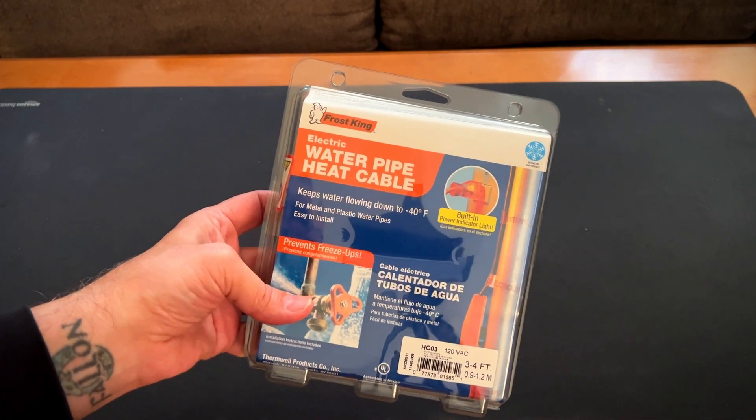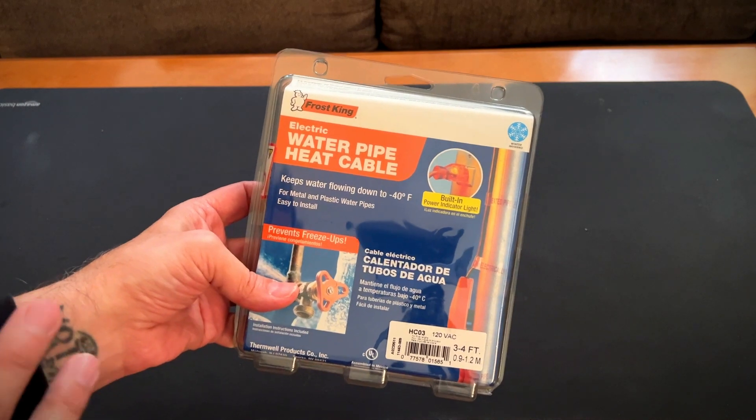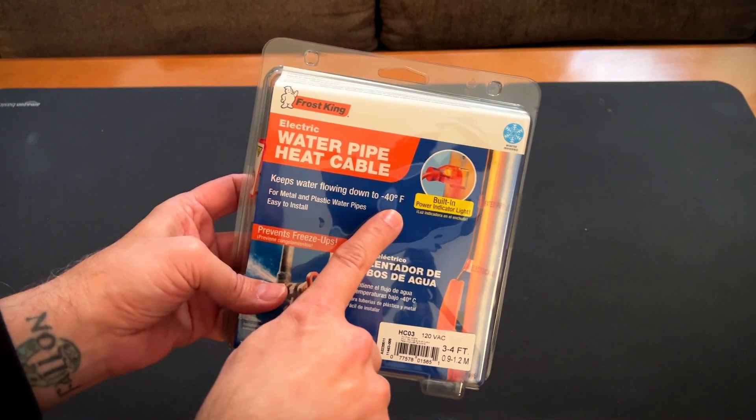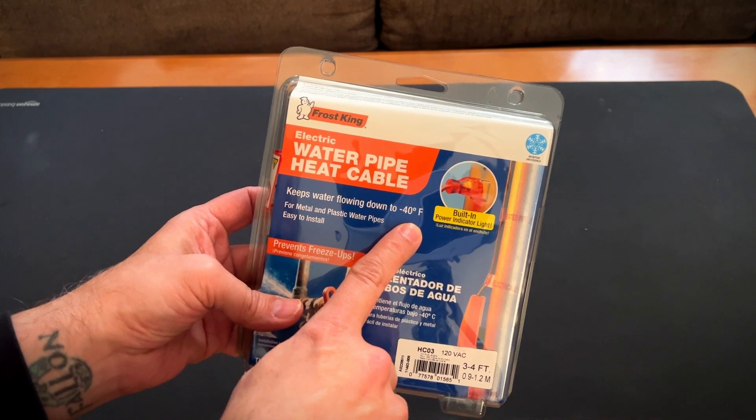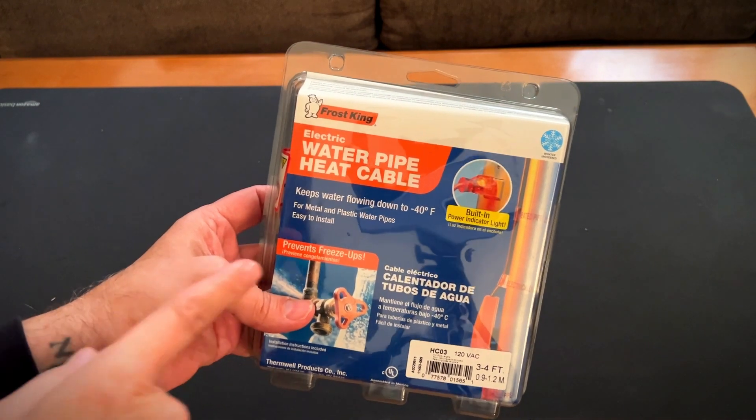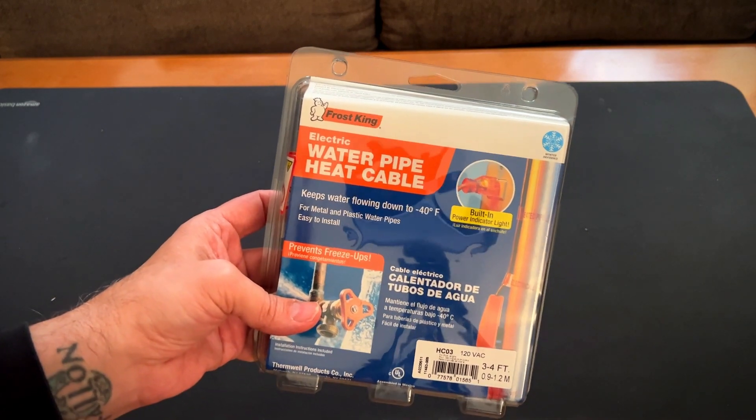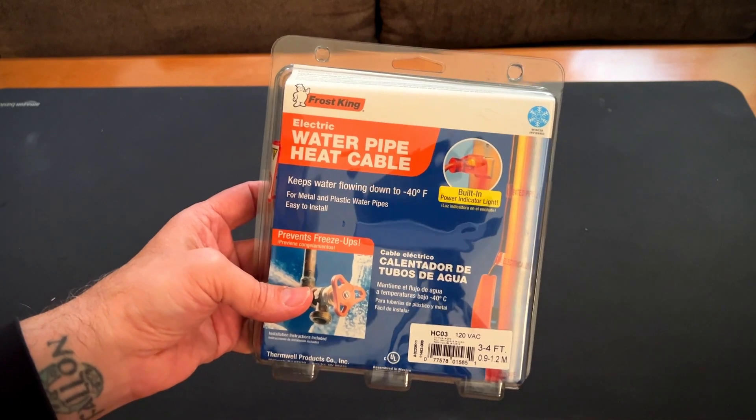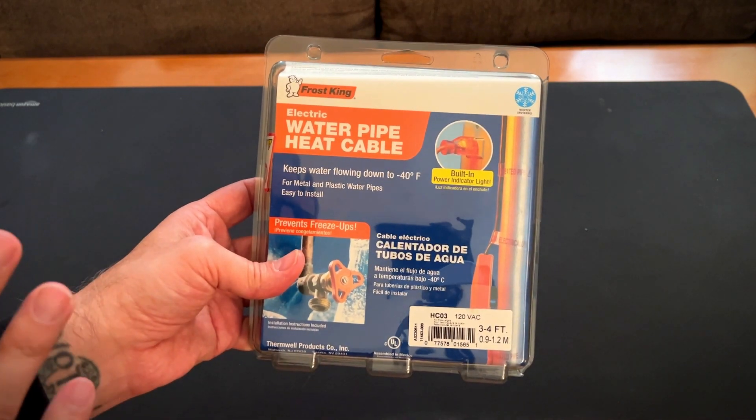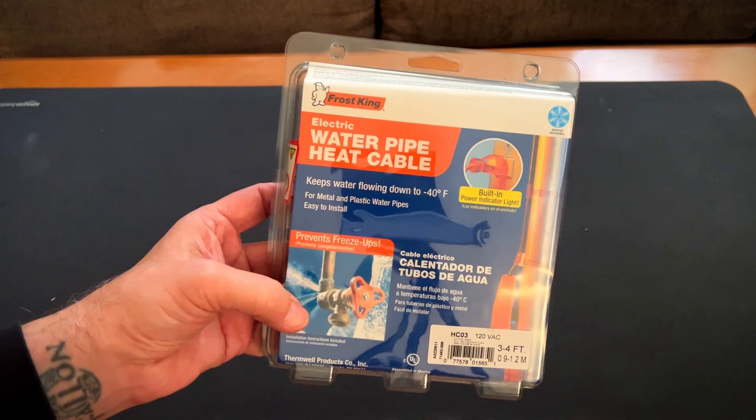Freezing could lead to cracking or slowing down your water flow. Keeps water flowing down to minus 40 degrees Fahrenheit. That's cold. It's for metal or plastic water pipes. Easy to install. This will help keep them from dripping or any of that kind of stuff. Prevents freeze-ups as you can see here.